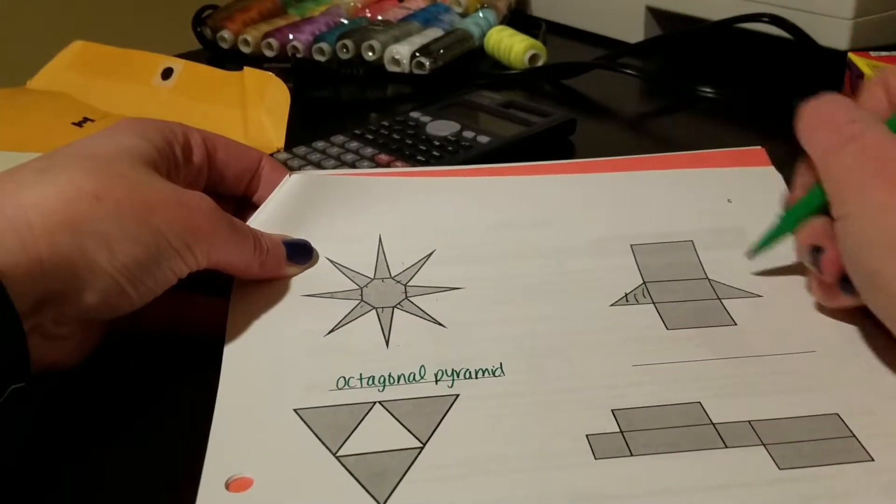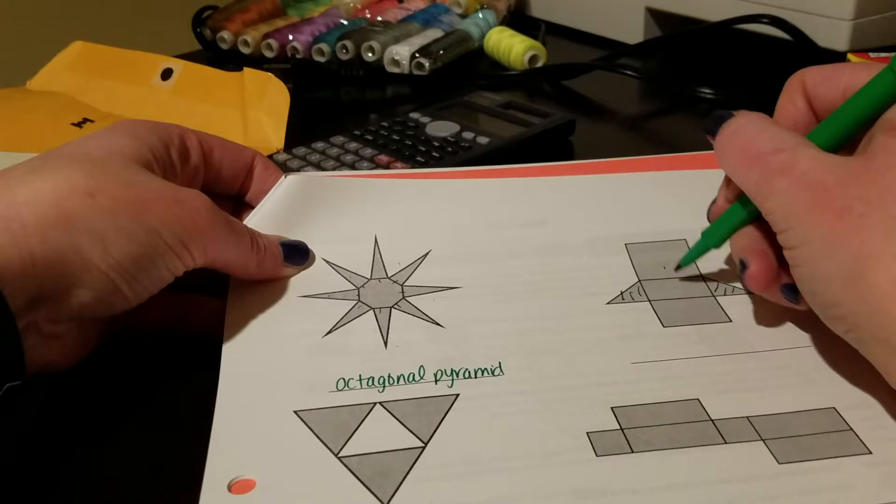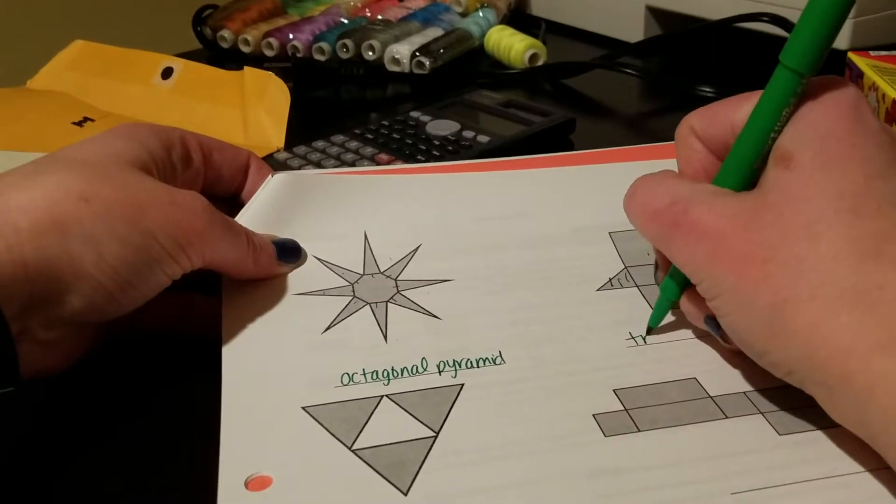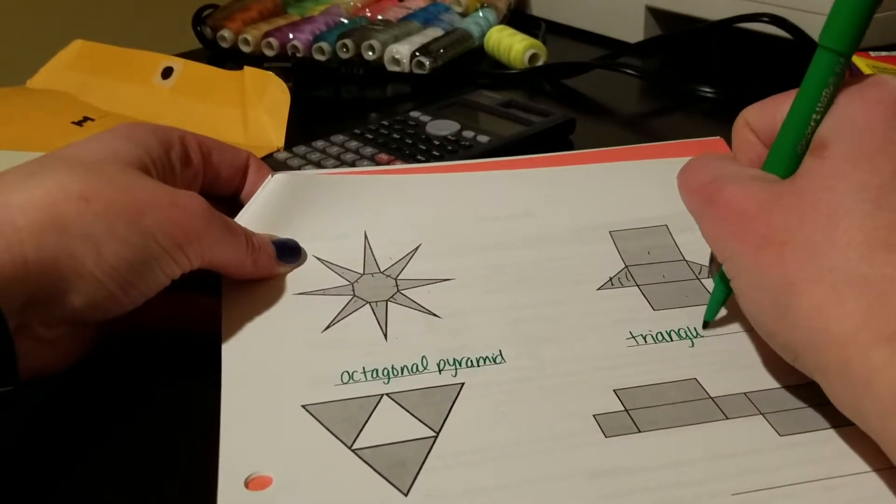In this one, my two bases are the triangles here, and I have my three rectangles that go around it. So it's a triangular prism.